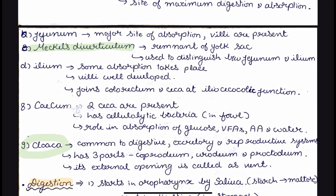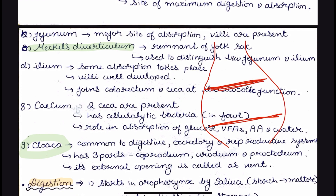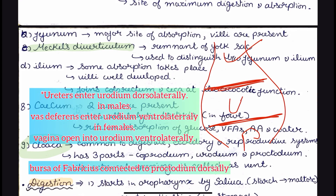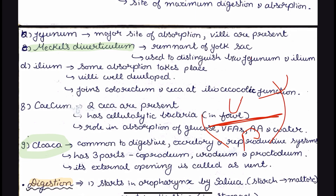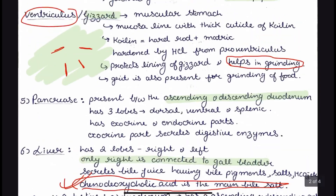One important structure at the end of the digestive system is the cloaca. It is a structure common to the digestive, excretory, and reproductive systems. It has three parts: coprodium, urodium, and proctodium. The external opening of the cloaca is called the vent — do not confuse vent and cloaca, as the cloaca is the tube-like structure while the vent is the external opening. The cloaca is divided into three parts by folds. The reproductive system connects in the proctodium, the ureters release urine in the urodium, and the coprodium is connected to the colon or rectum. In birds, there is no distinguishing between the colon and rectum.